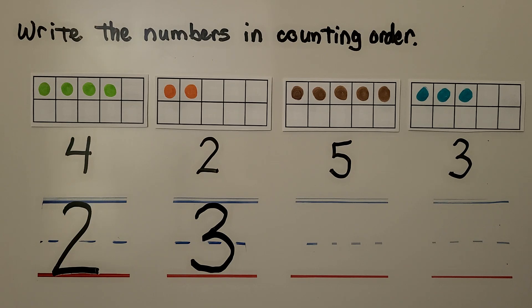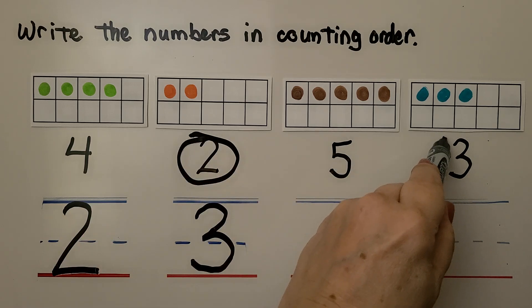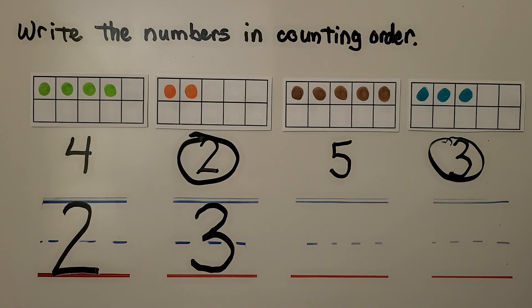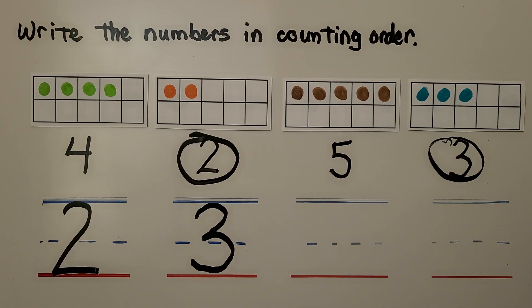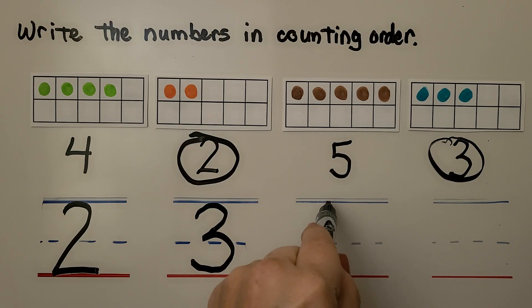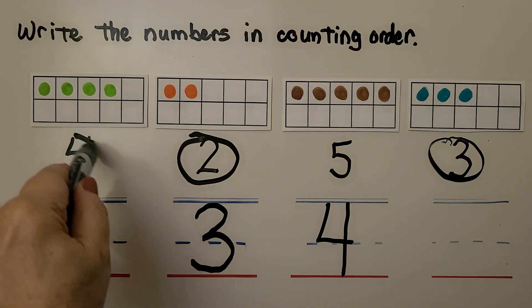Do you know what the next number would be — which is one more than 3? We did the 2, we did the 3. Which one comes next, this 4 or this 5? If you said 4, you're right — that's 1 more than 3. We should put a 4 here.